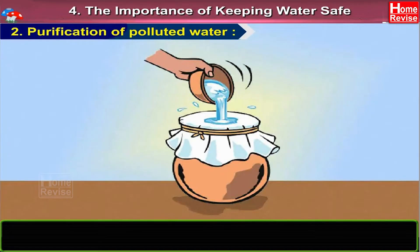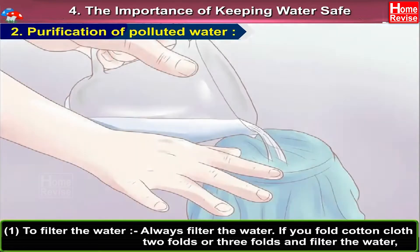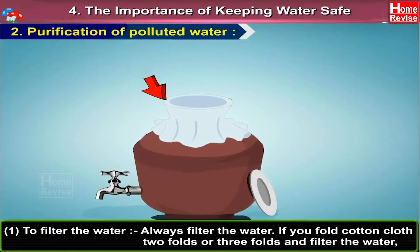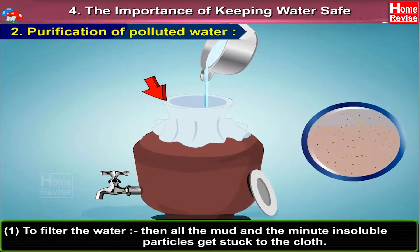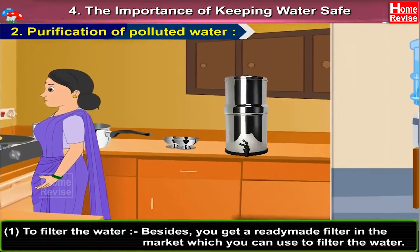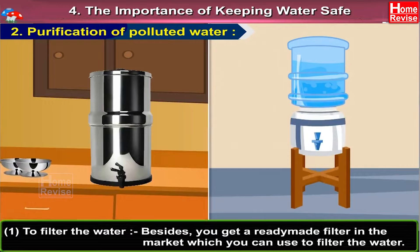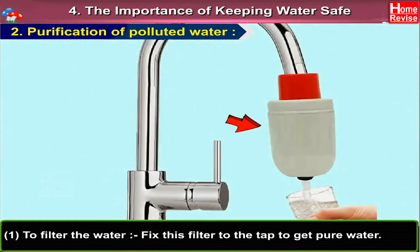Purification of Polluted Water. Method 1: To Filter the Water. Always filter the water. If you fold cotton cloth two or three folds and filter the water, then all the mud and the minute insoluble particles get stuck to the cloth. Besides, you get a ready-made filter in the market which you can use. Fix this filter to the tap to get pure water.